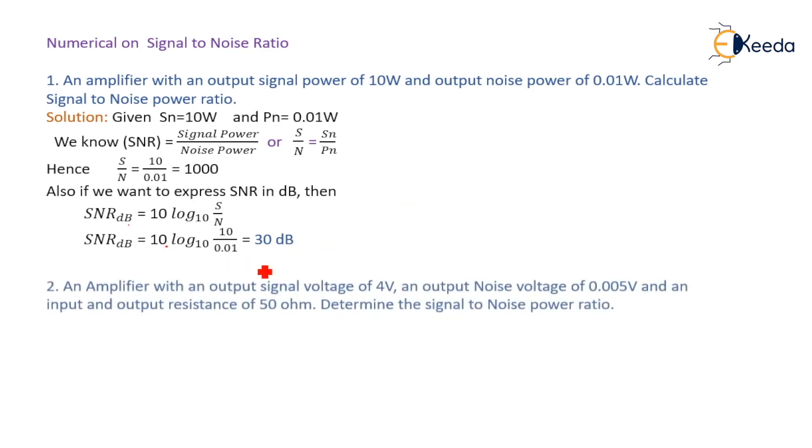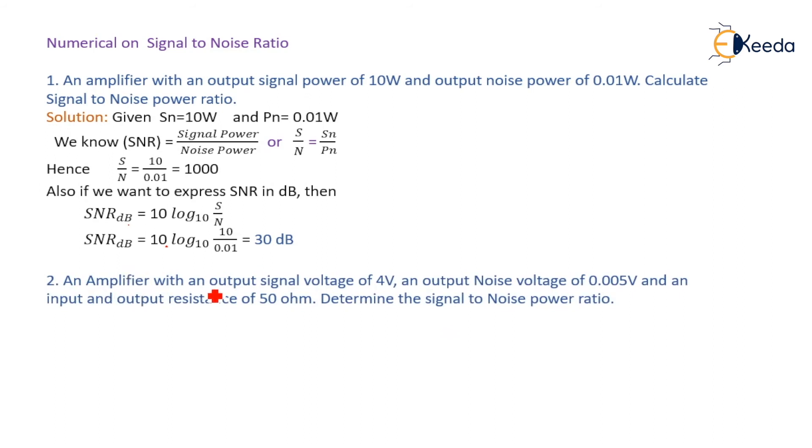Let us see another example. An amplifier with an output signal voltage of 4 Volt, an output noise voltage of 0.005 Volt, and an input and output resistance of 50 Ohm, determine the signal to noise power ratio.